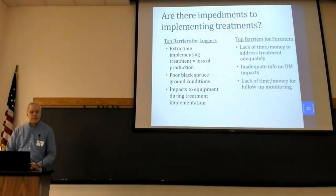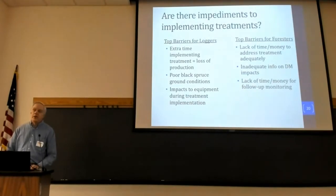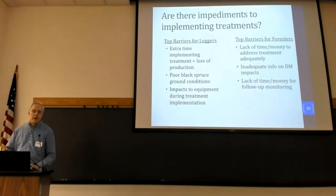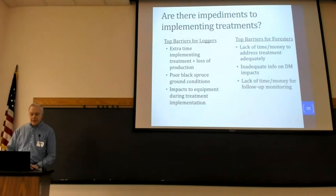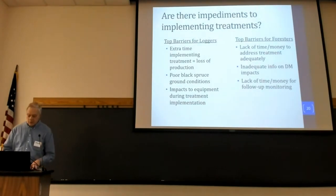We asked foresters what they think are the top issues or impediments facing loggers: the extra time it takes to cut all those non-merchantable small stems, poor black spruce ground conditions especially in recent winters when it wasn't cold, and impacts to equipment during those treatments — exposing hydraulic hoses and causing breakage while brushing out extra trees. For foresters, the top three impediments were lack of money and time to implement treatments and do post-sale follow-up, not enough impact information about whether treatments are really effective, and lack of follow-up funding to do monitoring in subsequent years after harvest.